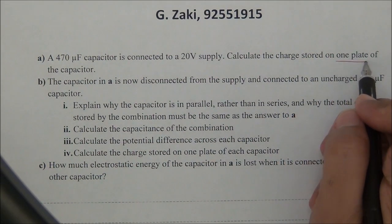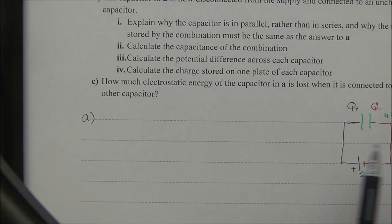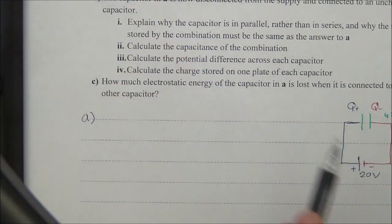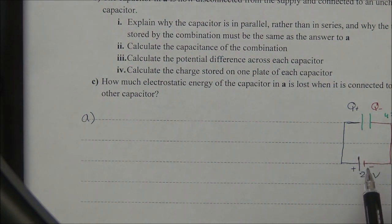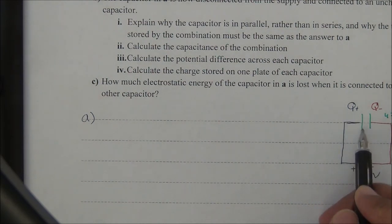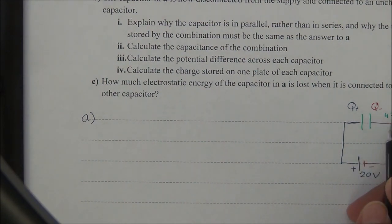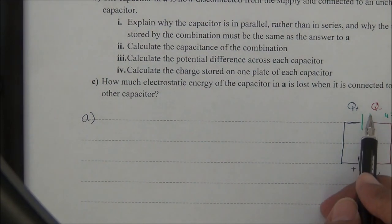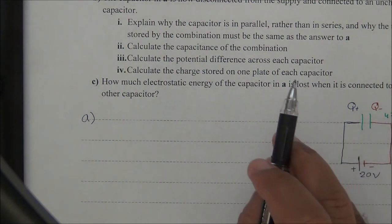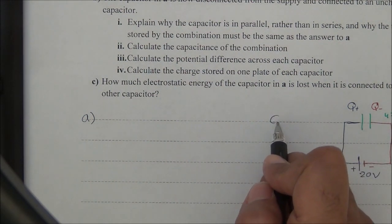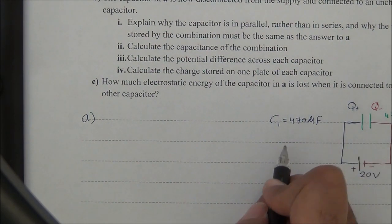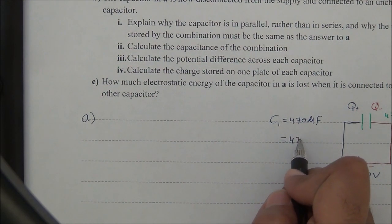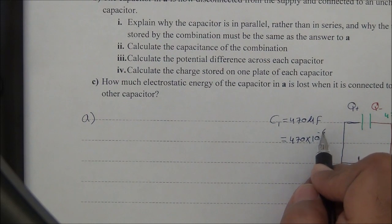To solve this question we draw the circuit. This is a power supply with positive and negative terminals, so one plate becomes positively charged and the other plate becomes negatively charged. The capacitance of the capacitor is C1 = 470 microfarad.